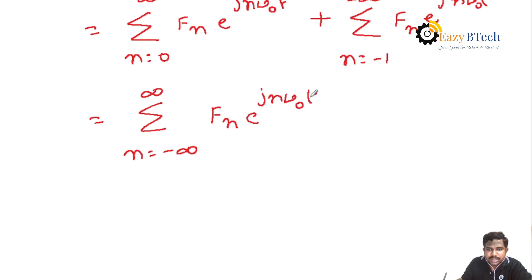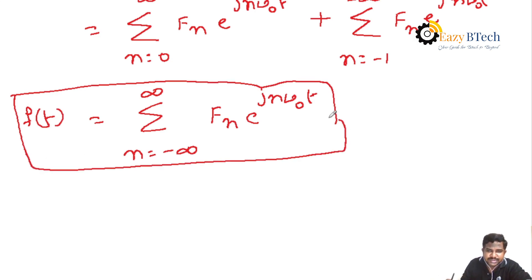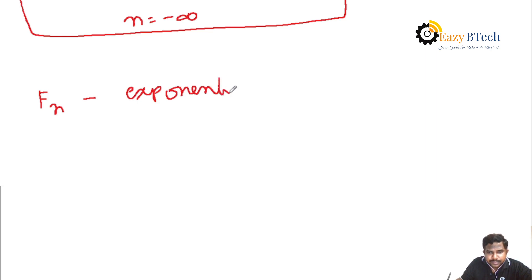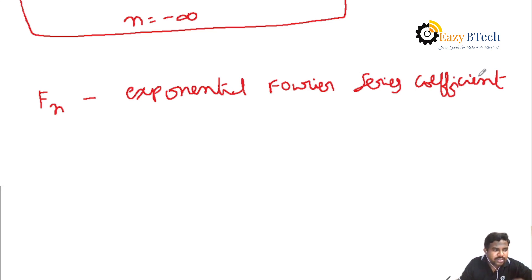The result is that f(t) = Σ (n=−∞ to +∞) Fn·e^(jnω₀t). This is the function of the exponential Fourier series. Before finding the function value, you must find out the exponential Fourier series coefficient, that is, Fn.